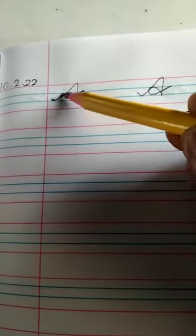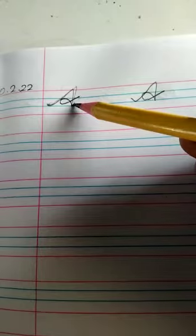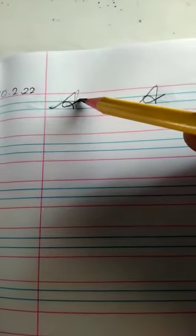Start from the baseline. Up forward slanting line. Down backwards slanting line. Then up forward slanting line, anti-clockwise loop.